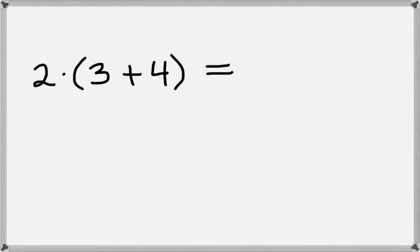It turns out there's two ways to do this. The easiest way is probably just to take 3 plus 4 first, and get 7, and then we can multiply 2 times 7, which gives us 14.